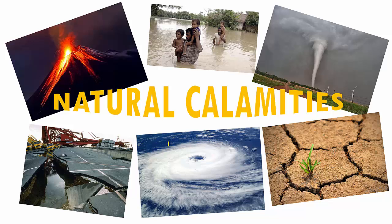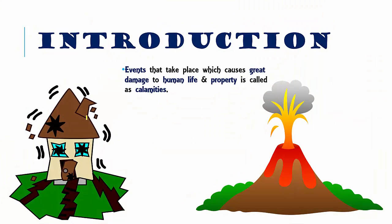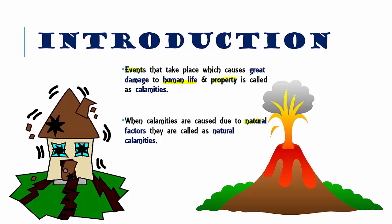Hello children and welcome to a new chapter: Natural Calamities. In this chapter, we will be dealing with all the natural calamities that we see around us. Events that take place which cause great damage to human life as well as property are called calamities. And if these calamities are caused due to natural factors or because of the earth, they are called natural calamities.